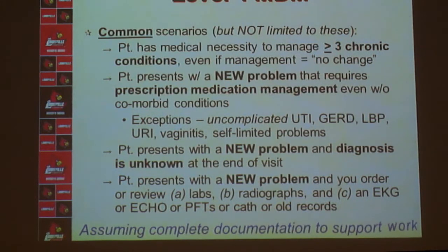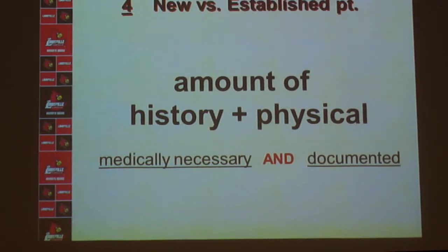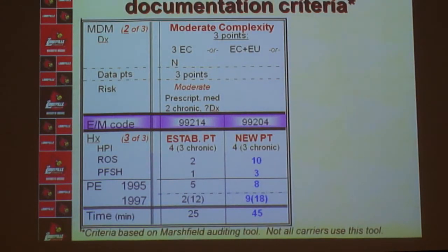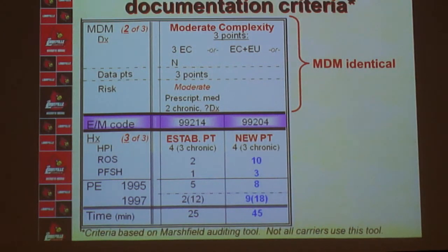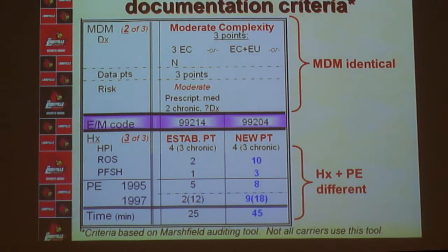The main difference between the new and established patient is the amount of history and physical that's medically necessary to obtain and adequately documented in the chart. In tabular form, comparing the criteria for Level 4 new versus established, the medical decision-making criteria is identical. Whether it's a new or established patient, you're going to do the same amount of work on the HPI component. What differs is the review of systems, past medical, family and social history, and the amount of exam needed — the review of systems goes from a minimum of two to a minimum of ten.